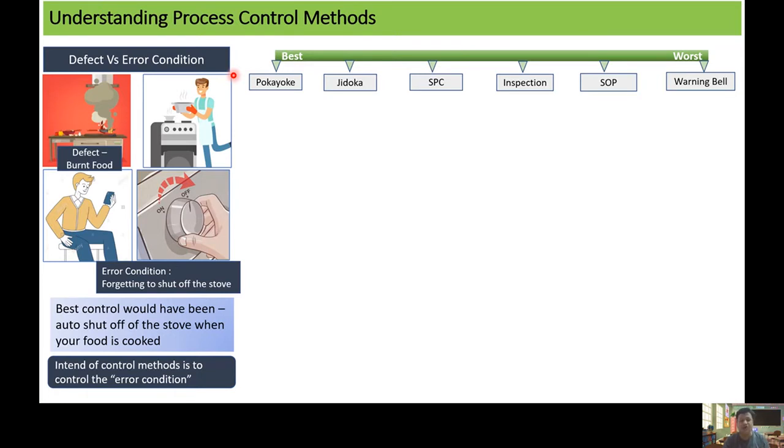We will start with Poka-yoke and Jidoka. Poka-yoke is also known as Mistake Proofing or Full Proofing, where the countermeasure is designed in such a way that a person is not allowed to make any mistake or the defect is prevented from being even occurred.